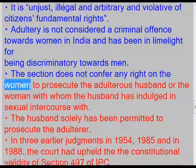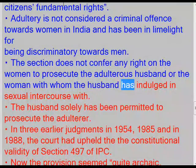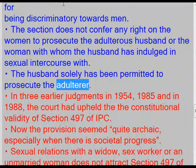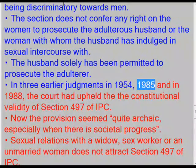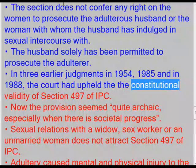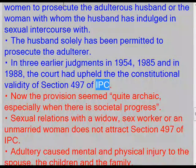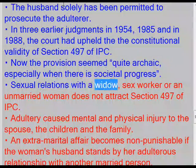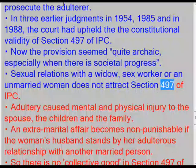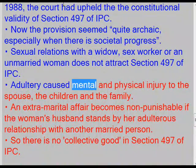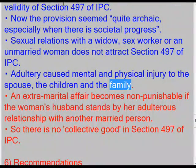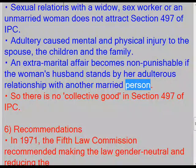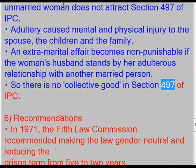The section does not confer any right on women to prosecute the adulterous husband or the woman with whom the husband has indulged in sexual intercourse. The husband solely has been permitted to prosecute the adulterer. In three earlier judgments — in 1954, 1985, and 1988 — the court had upheld the constitutional validity of Section 497 of IPC. Now the provision seems quite archaic, especially given societal progress. Sexual relations with a widow, sex worker, or an unmarried woman do not attract Section 497 of IPC. Adultery causes mental and physical injury to the spouse, children, and family. An extramarital affair becomes non-punishable if the woman's husband consents to her adulterous relationship, so there is no collective good in Section 497 of IPC.